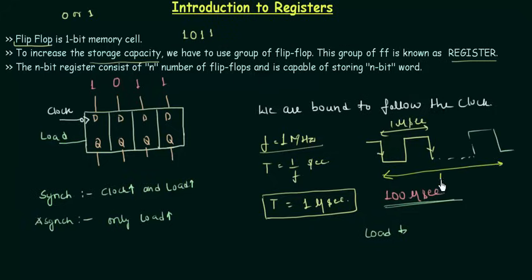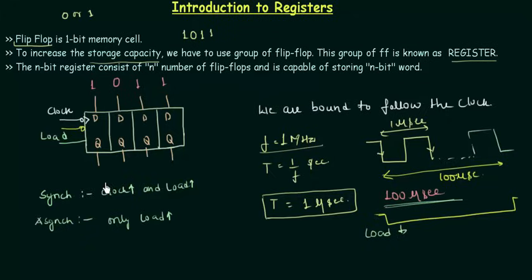So if I want to store 1011 for 100 microseconds, I make the load low for those 100 microseconds. While the load is low, there is no change in the register — the stored value stays as 1011. There is also a clear input, which you already know — it resets all flip-flops. The clear is connected internally to all four flip-flops. So this is a brief introduction to registers. In the next presentation we will see the data format and classification of registers. The key takeaway is the load — our independent control to prevent data loss on every clock pulse.